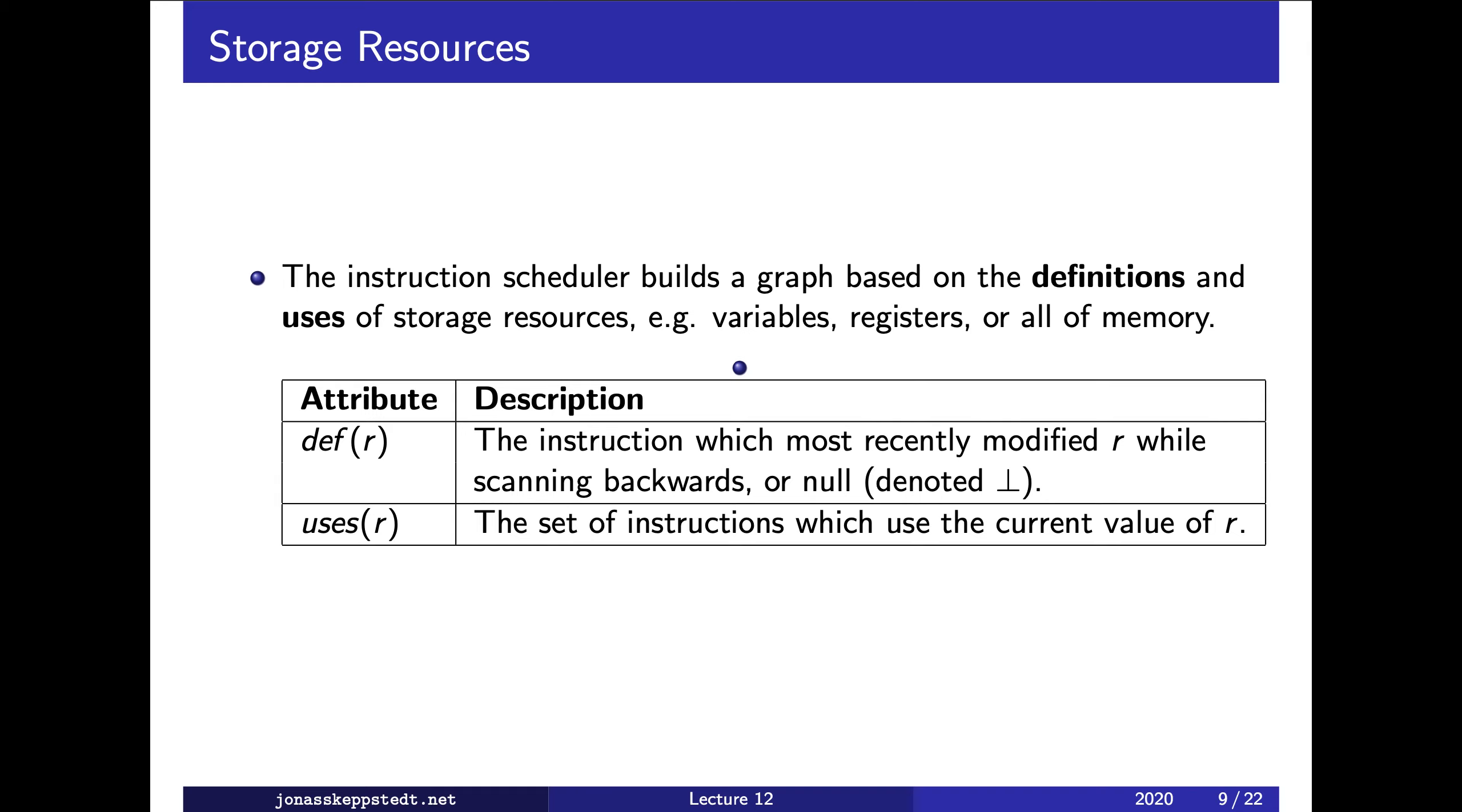To construct the instruction level data dependence graph, we base that on storage resources. A storage resource can be a variable, a register, or all of memory. Each storage resource has two attributes: def(r), the instruction which most recently modified r while scanning backwards, and uses(r), the set of instructions which use the current value of r.